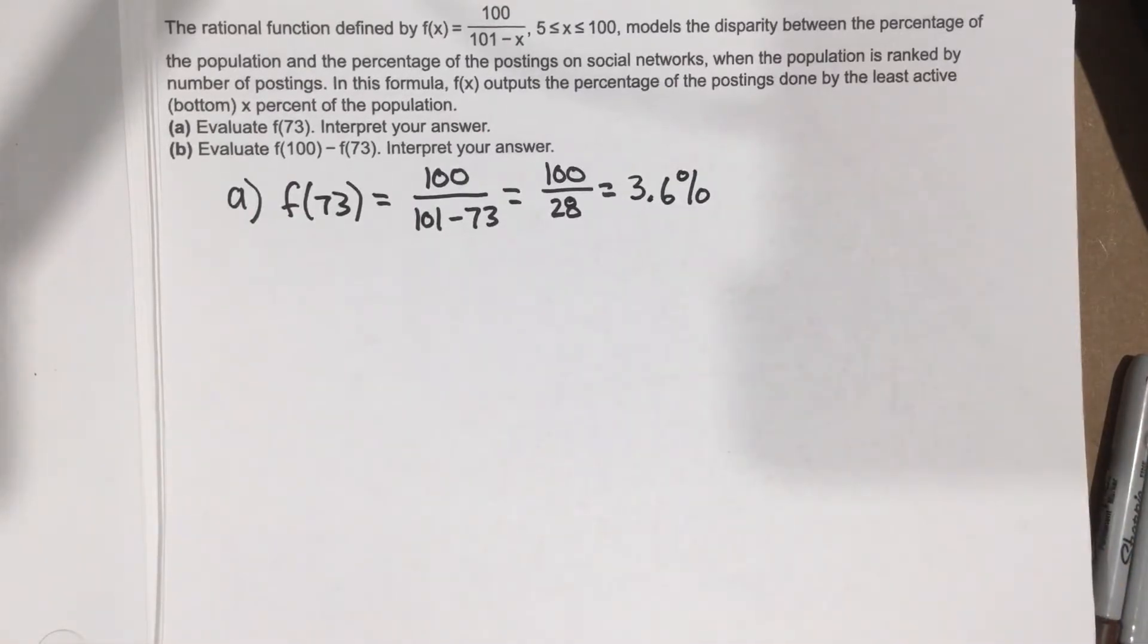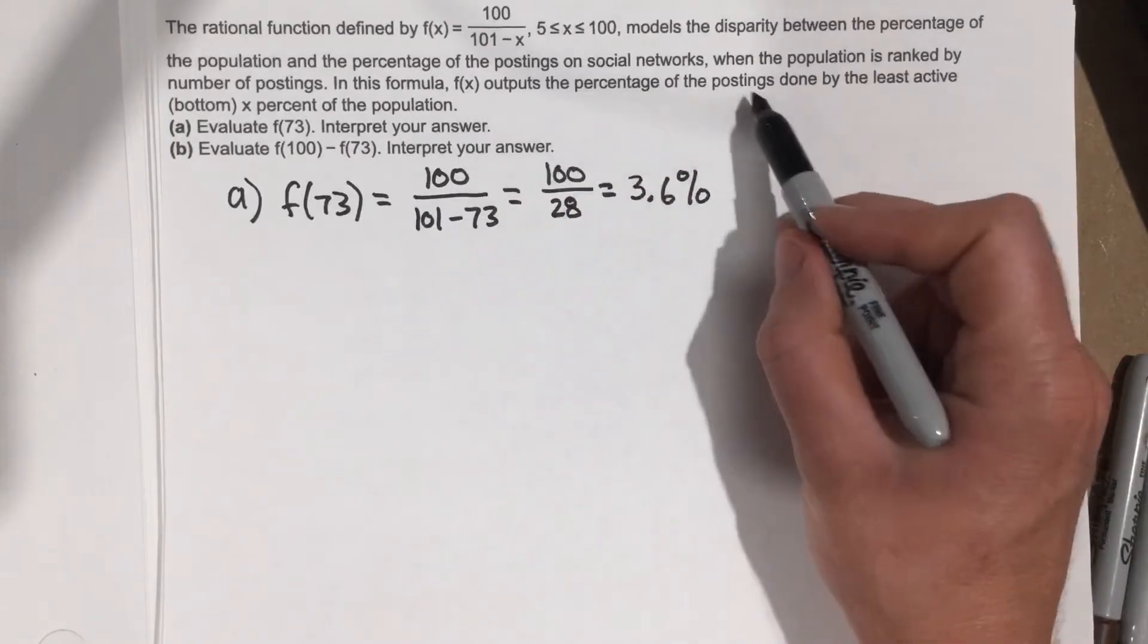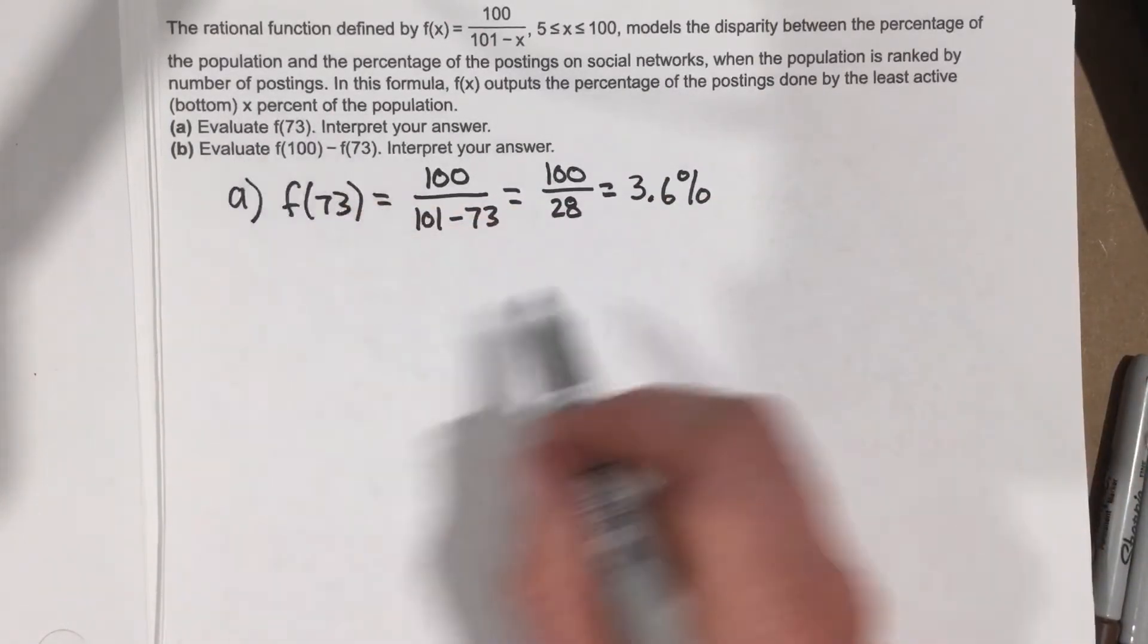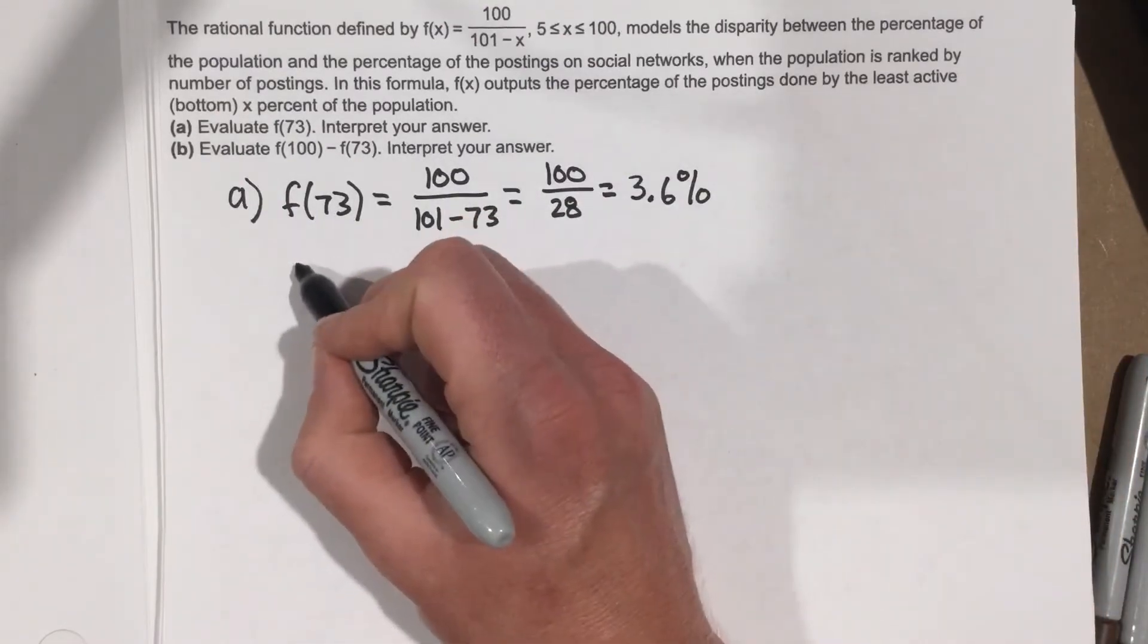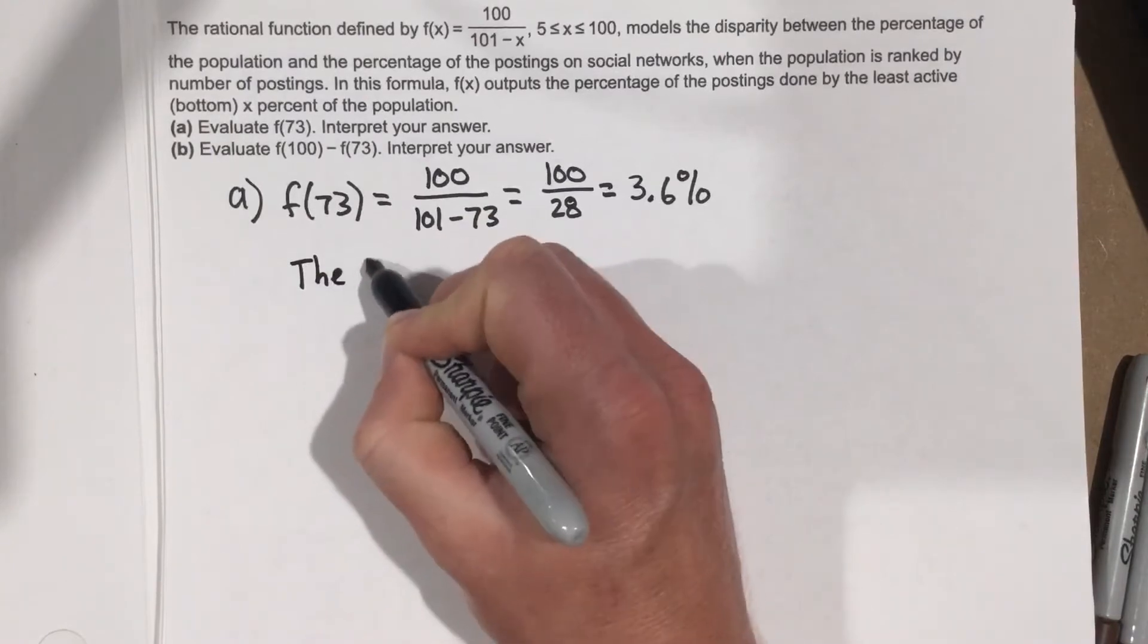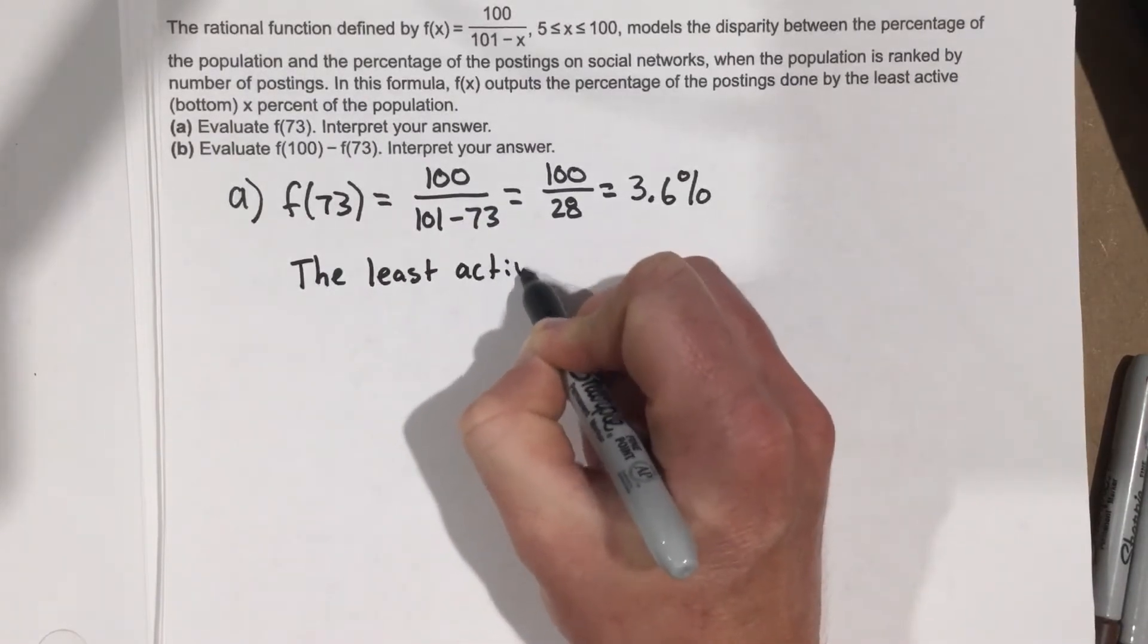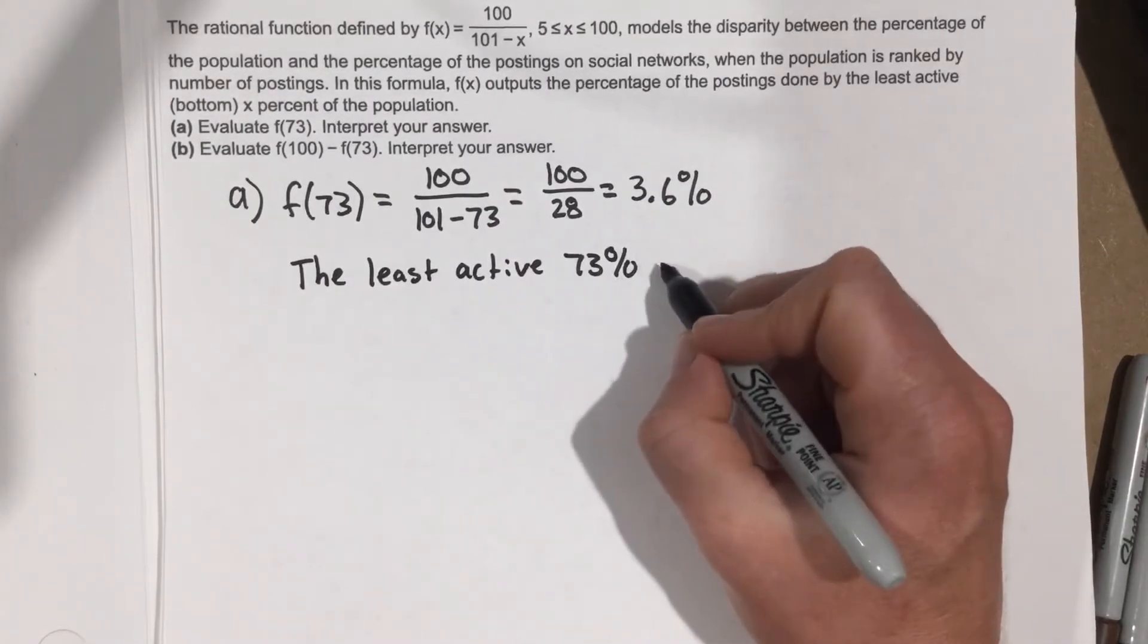Because f(x) outputs the percentage of postings done by the least active bottom x percent. So 3.6% by the least active bottom x percent. It says interpret your answer. So the least active 73% of the population.